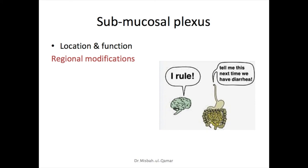The submucosal plexus, located in the submucosal layer, is mainly concerned with controlling function within the inner wall of each minute segment of intestine. Many sensory signals originating from the gastrointestinal epithelium are integrated in the submucosal plexus to control local effects. Regional modifications include a bilayered submucosal plexus in the intestine, while the esophagus lacks ganglia in the submucosal plexus. Local intestinal functions controlled by the submucosal plexus include secretion, absorption, blood flow, and local contraction of muscles in the deep parts of the mucosa.